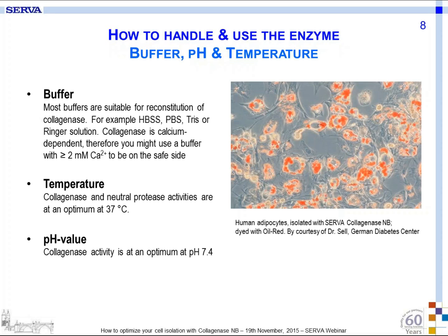What do you have to know when choosing your buffer, pH, and temperature? Most buffers are suitable for reconstitution of the collagenase, for example HBSS, PBS, or Tris-Ringer solution. Collagenase depends on calcium; therefore, you might use a buffer with 2 millimolar or more calcium ions to be on the safe side, even though it is not strongly necessary since our collagenases already have bound calcium ions to the enzyme. To use the collagenase most efficiently, it is good to know that collagenase activity is at an optimum at 37 degrees and pH 7.4.